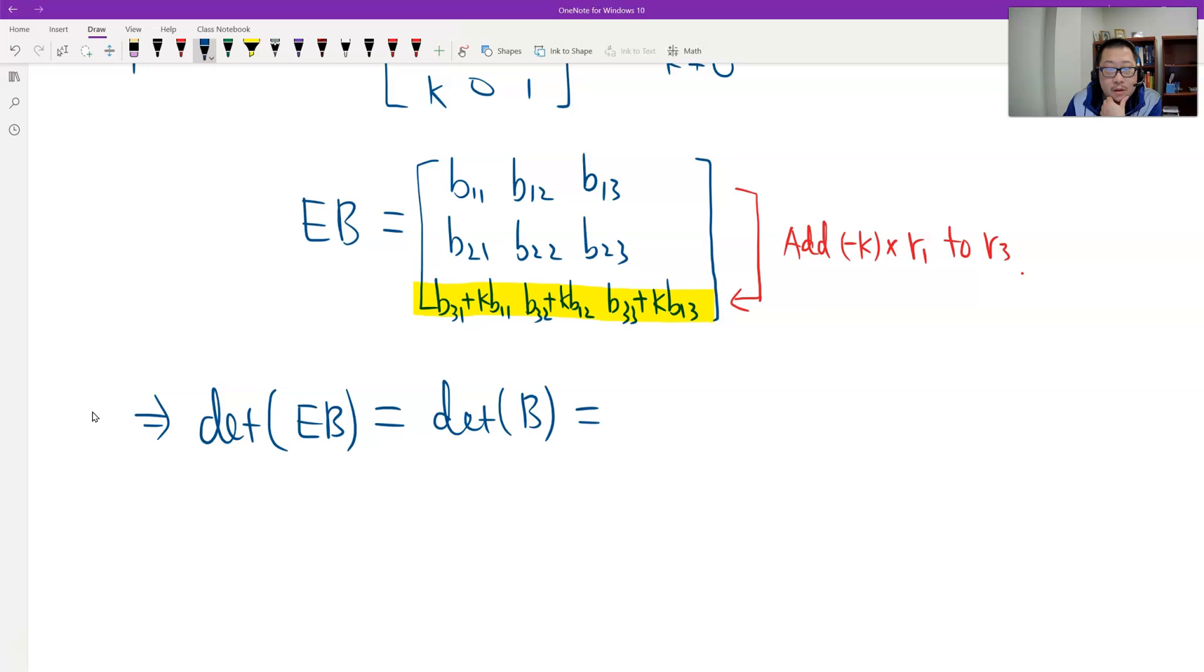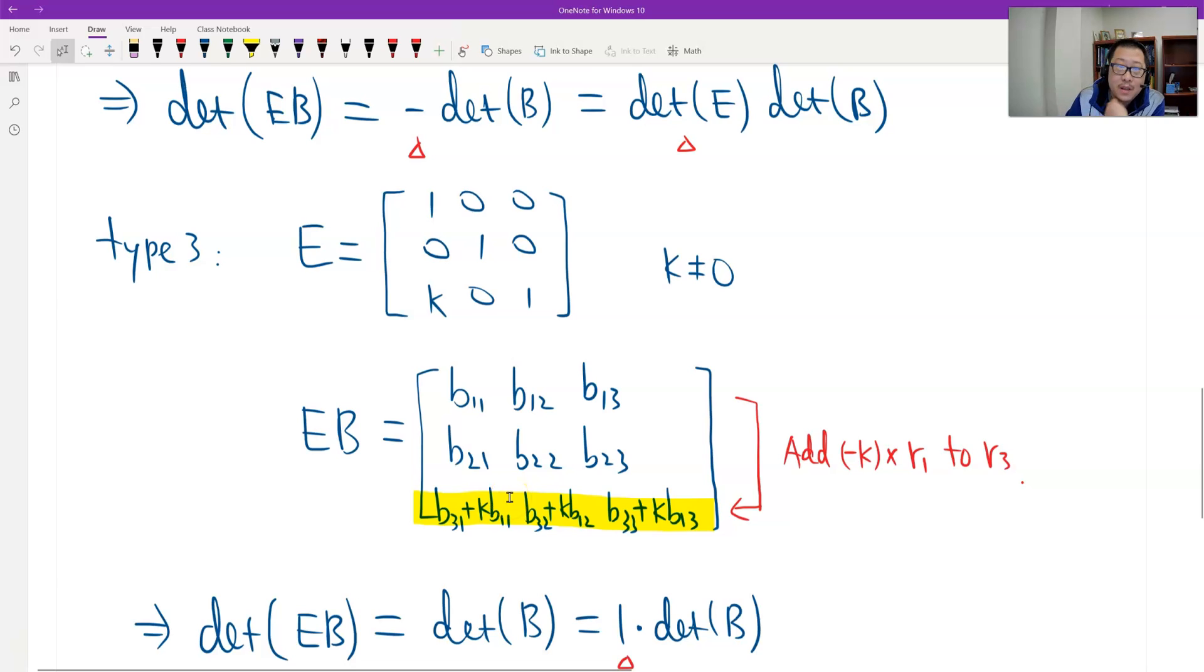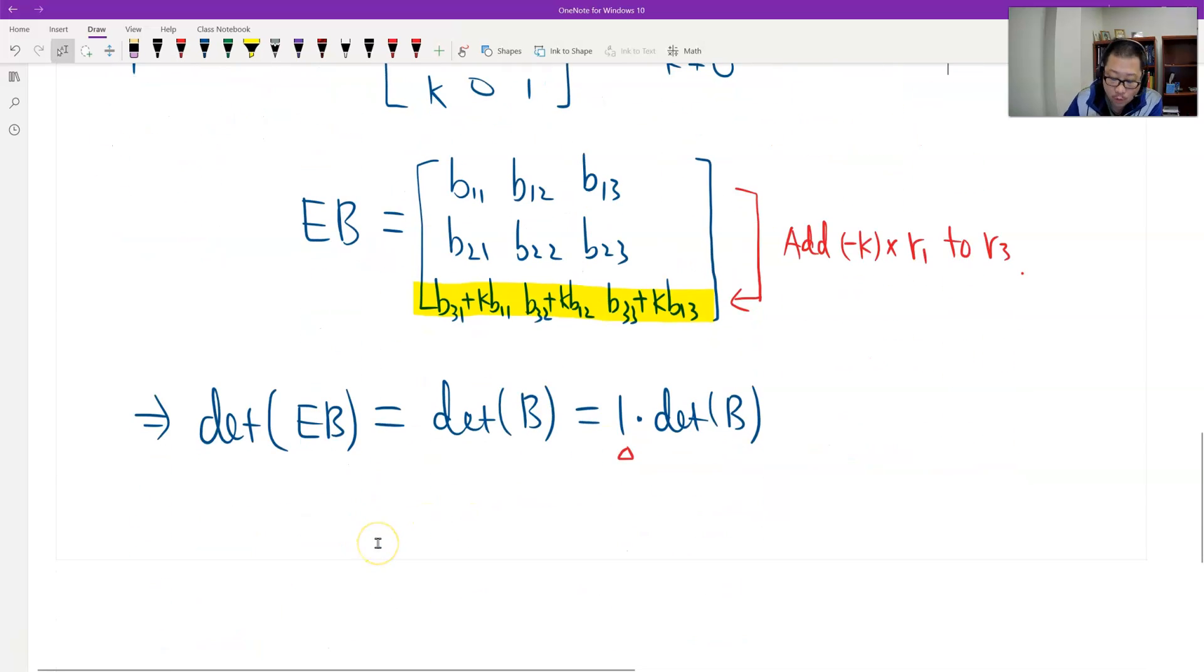This equals 1 times the determinant of B. What is 1? It's easy to see, the third type of elementary matrix has determinant equals 1. We use this result. 1 just equals the determinant of matrix E, still the determinant of B. Can you see? Still the same result. We verified the three types of elementary row matrix.